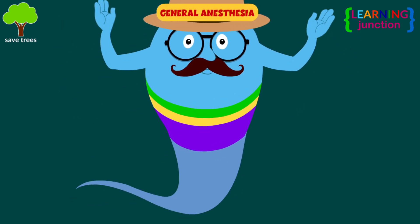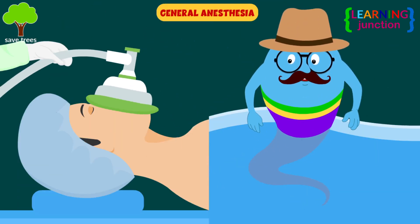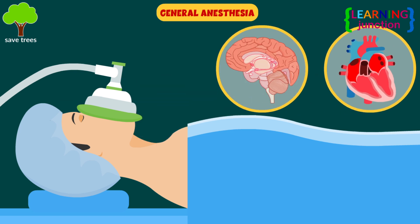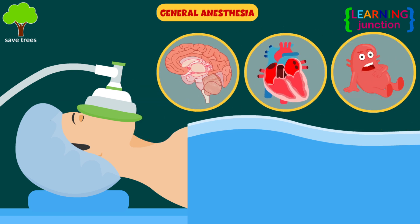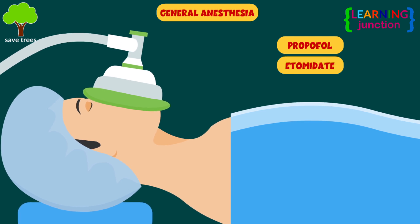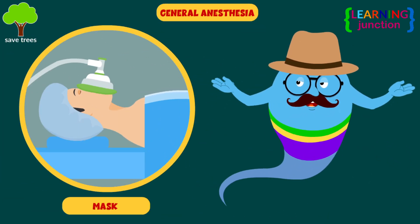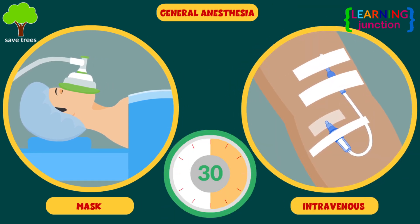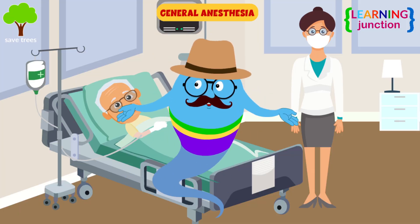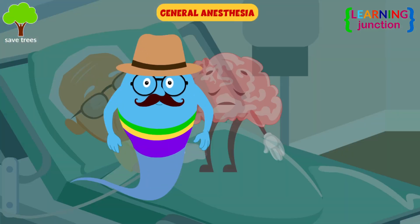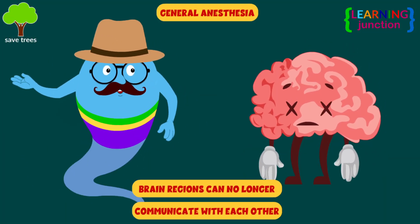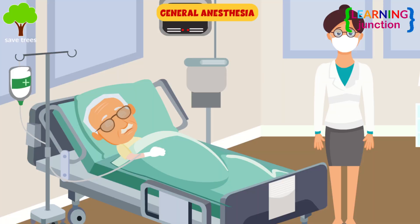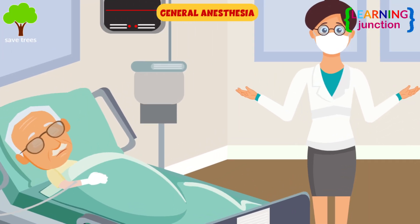General anesthesia affects the whole body. It's used during heart surgery, brain surgery, or organ transplants. Such anesthetic drugs include propofol, etomidate, and isoflurane. It's administered through a mask or an IV placed in the vein. It usually puts you to sleep in less than 30 seconds. This anesthesia changes the character of brain waves. Brain regions can no longer communicate with each other, resulting in deep unconsciousness, and the patient is ready for surgery.